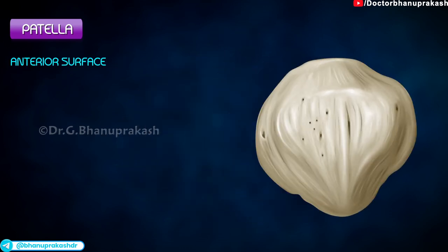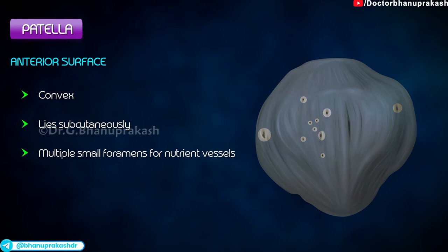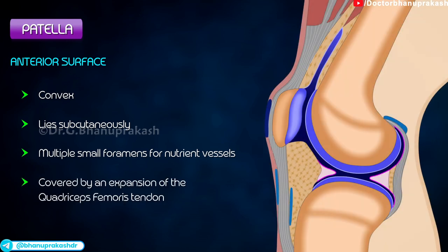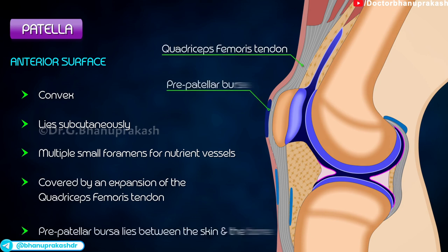Anterior surface. It is convex and lies subcutaneously. It has multiple small foramens for nutrient vessels. It is covered by an expansion of the quadriceps femoris tendon. A prepatellar bursa lies between the skin and the bone.